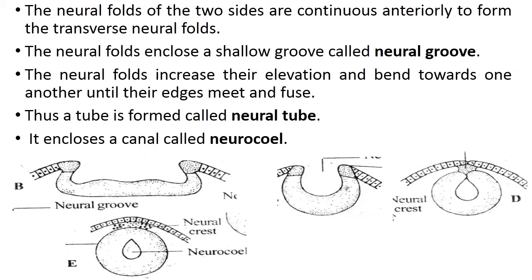The groove between the rising folds is known as the neural groove. As the fold starts to rise and a groove forms, the plate which was covering the dorsal surface becomes a groove, with the fold on either side. These folds grow inward and meet together to form what is known as the neural tube.